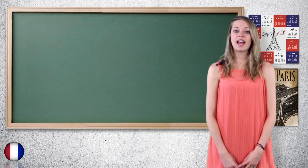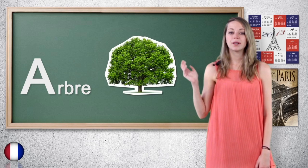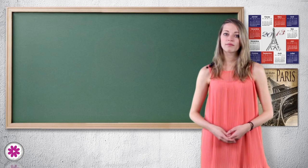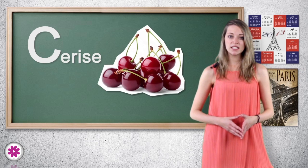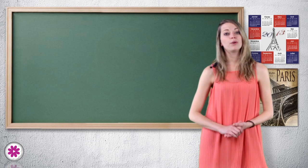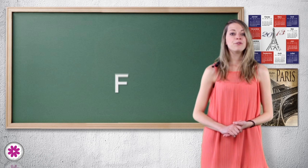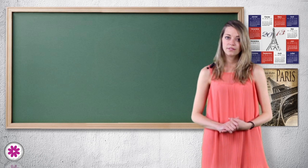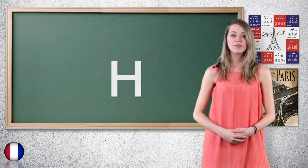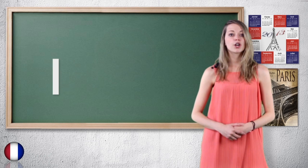The French alphabet: A comme arbre, B comme bateau, C comme cerise, D comme dent, E comme étoile, F comme famille, G comme garçon, H comme héros, I comme ici.